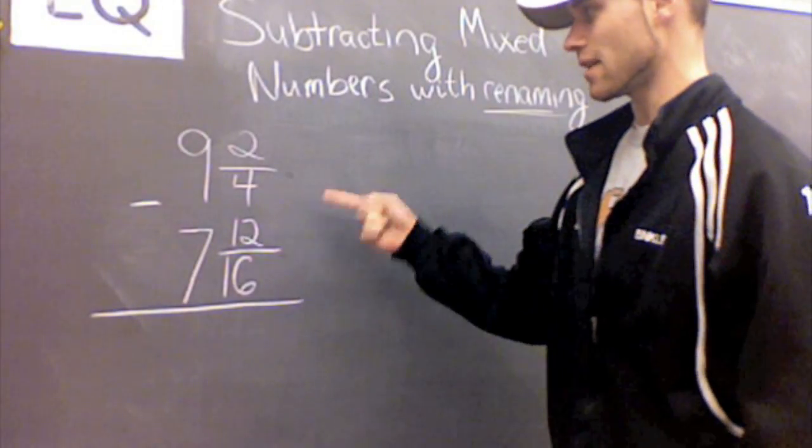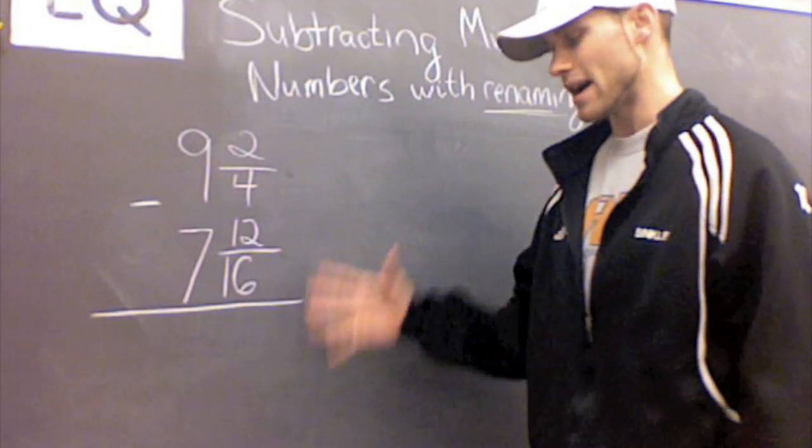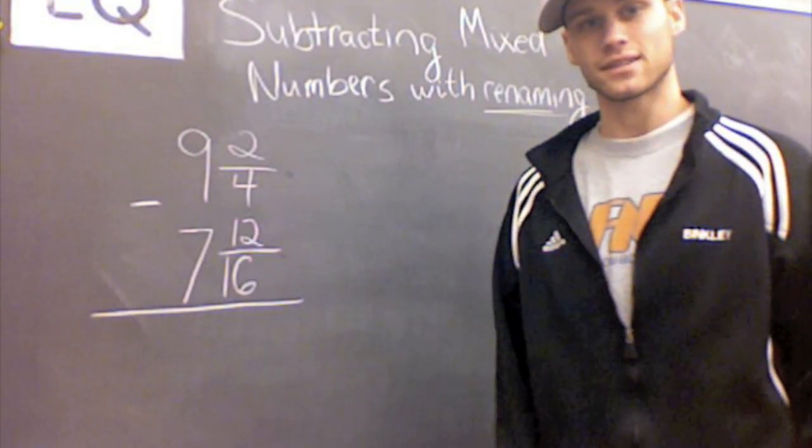So here we have our first example, 9 and 2 fourths minus 7 and 12 sixteenths. We're just going to go about the steps that we would take to subtract this problem.